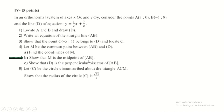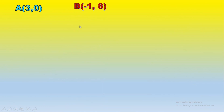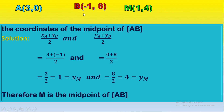Show that M is the midpoint of segment AB. We have coordinates A(3, 0) and B(-1, 8). The midpoint x-coordinate is (xA + xB)/2 = (3 + (-1))/2 = 2/2 = 1, which equals xM. The midpoint y-coordinate is (yA + yB)/2 = (0 + 8)/2 = 4, which equals yM. Therefore M is the midpoint of segment AB.